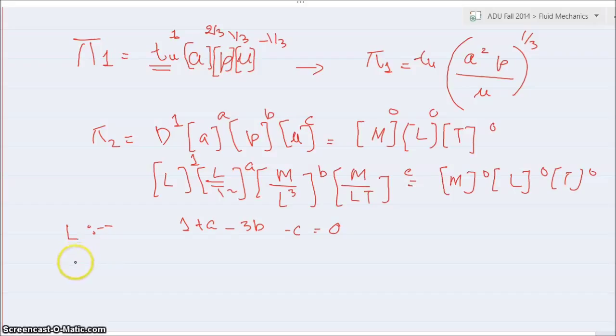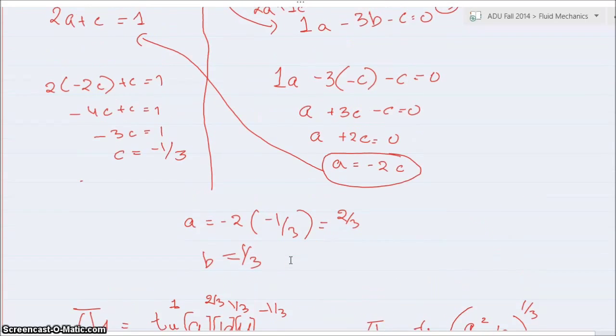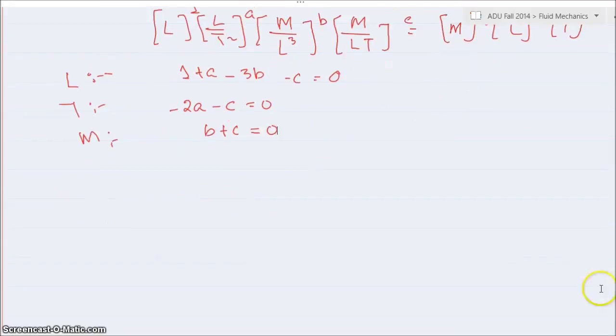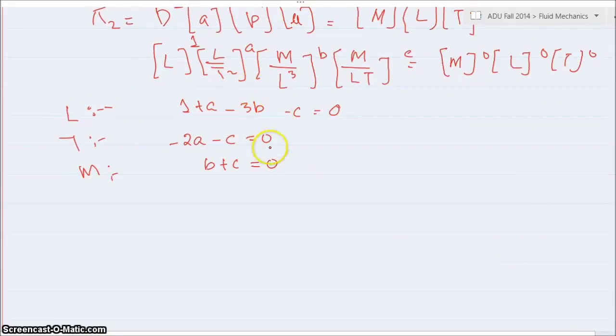For time we have minus 2a minus c is equal to 0, and for mass we have b plus c is equal to 0.